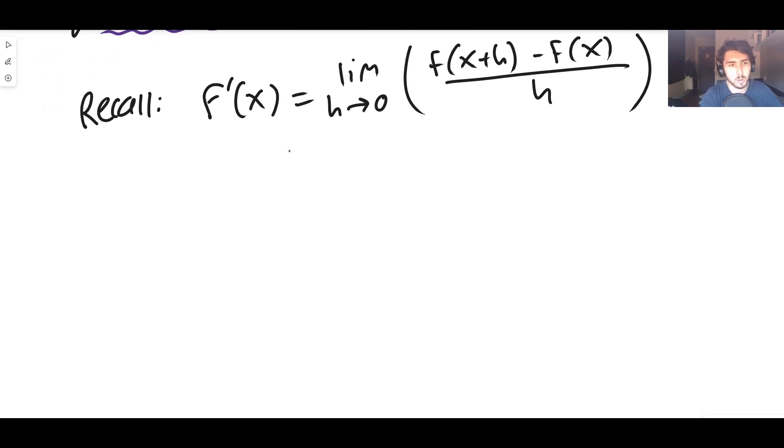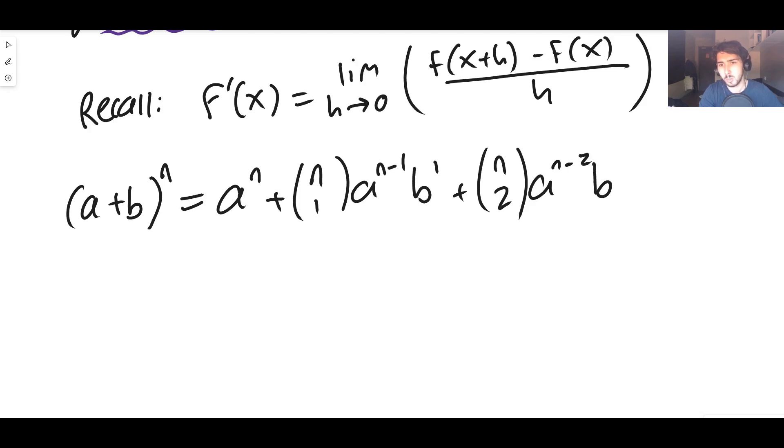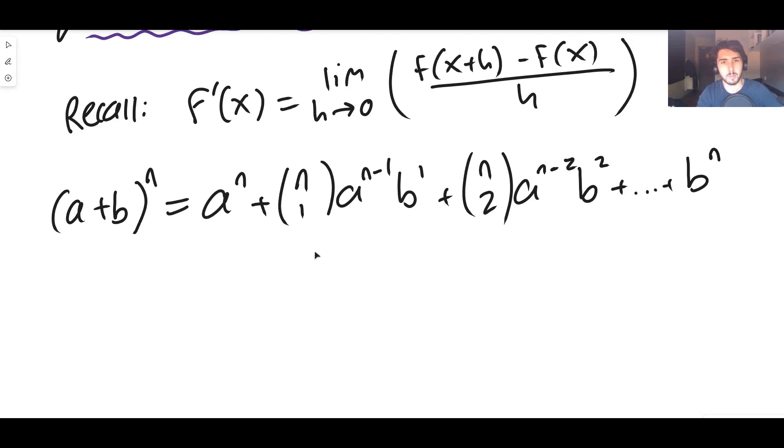We also know that a plus b to the power of n using the binomial expansion is a to the n plus n choose 1, a to the n minus 1, b to the 1, plus n choose 2, a to the n minus 2, b squared, and this goes all the way on until we finally get to just b to the power of n. This is the binomial expansion.